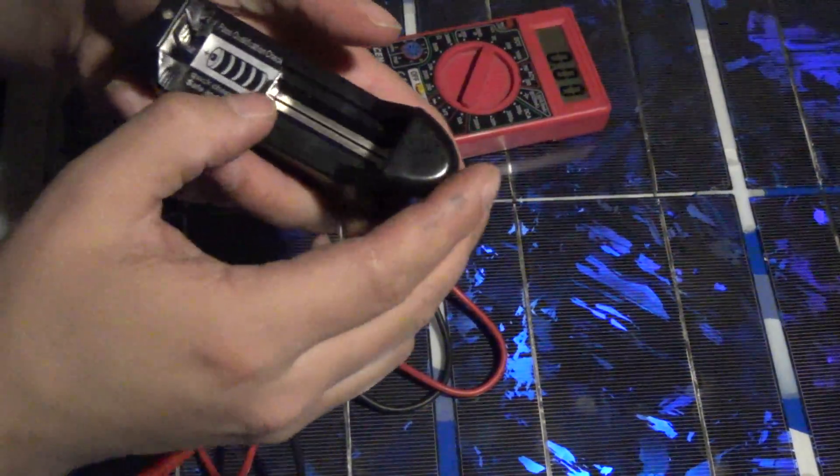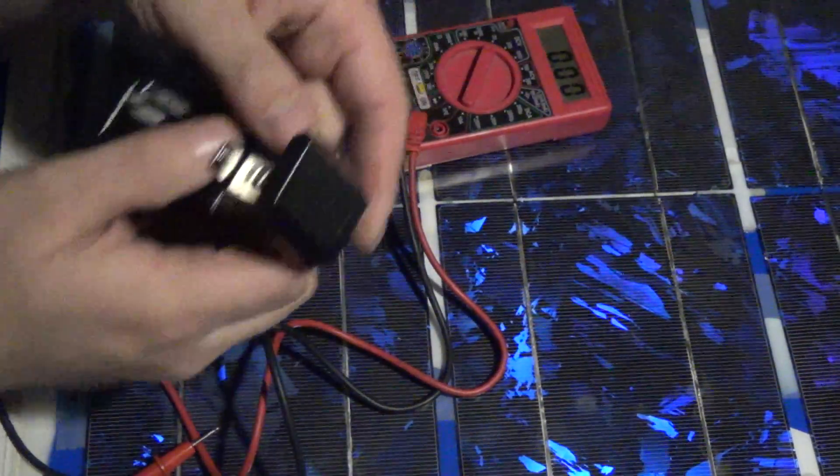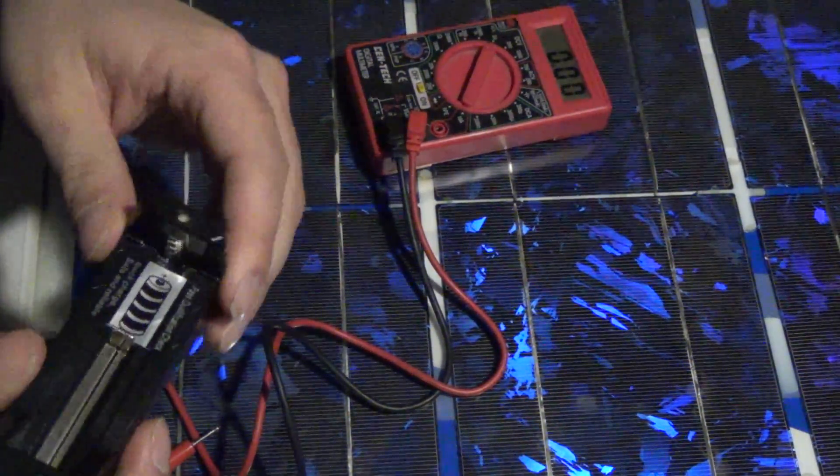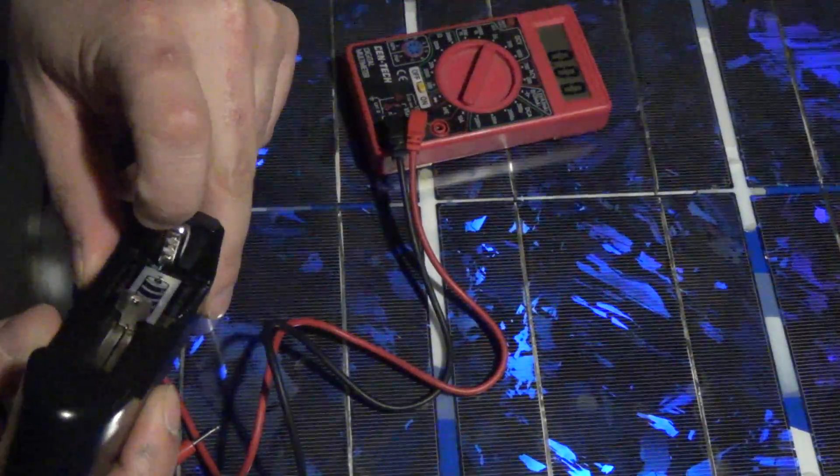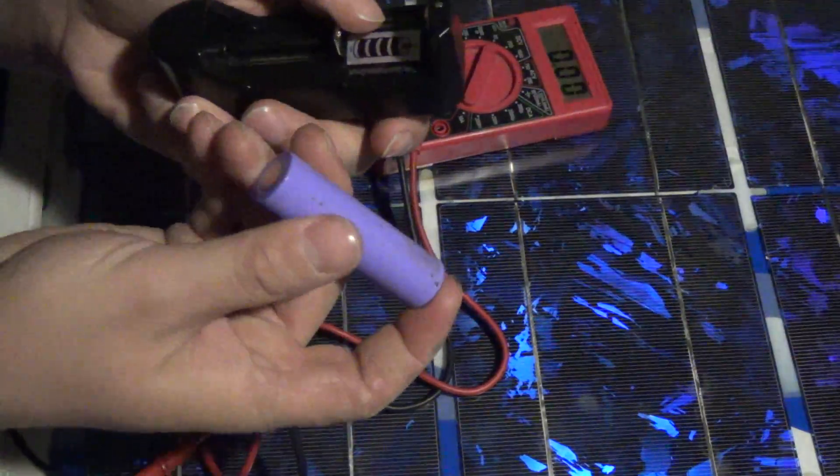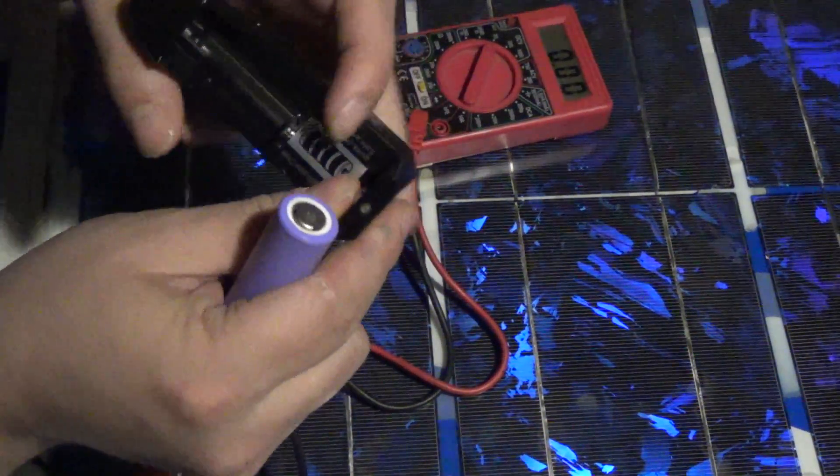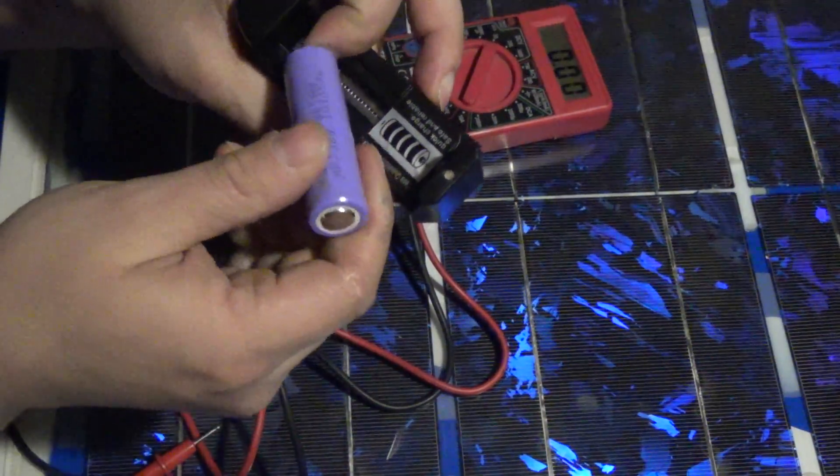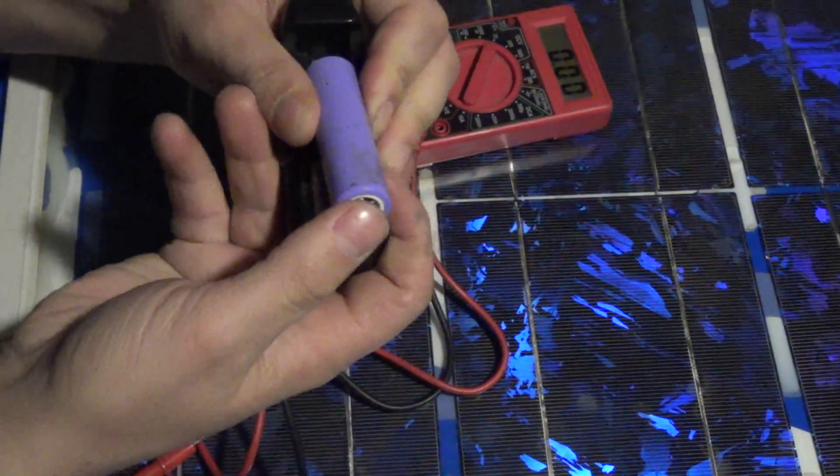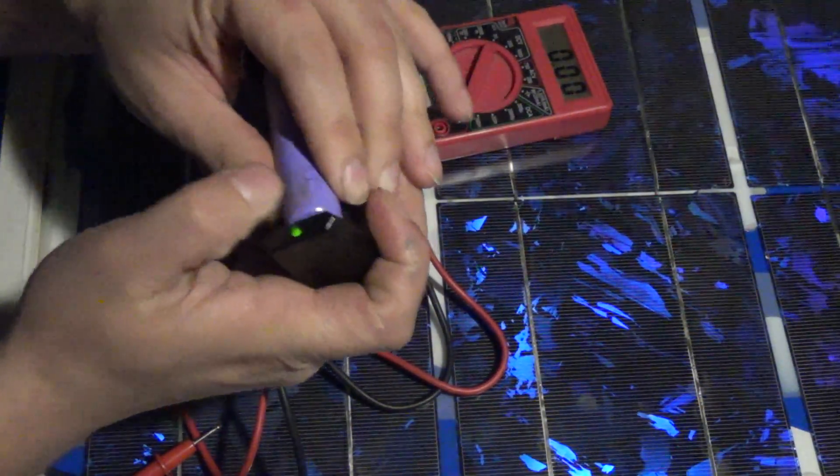This side we have a spring-loaded tensioner to keep the battery in. Just keep in mind positive goes down, negative goes on the tensioner. My only complaint so far is since the cell is just right to fit in there, it's hard to get the cell in and pushed in without worrying about breaking it.